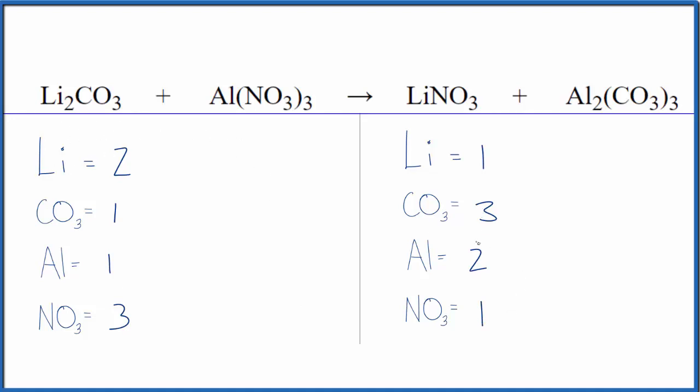Let's start by balancing the aluminums, because if I put a two here, one times two, that'll give me two aluminums. But the three nitrates times two, that'll give me six nitrates.